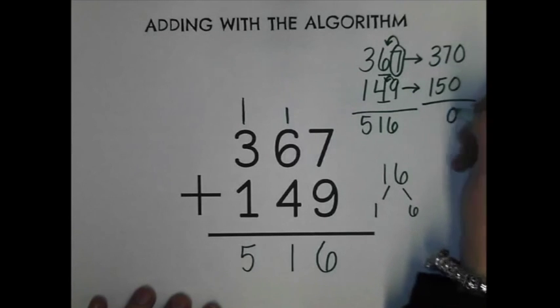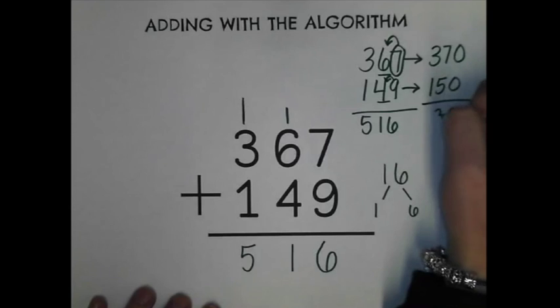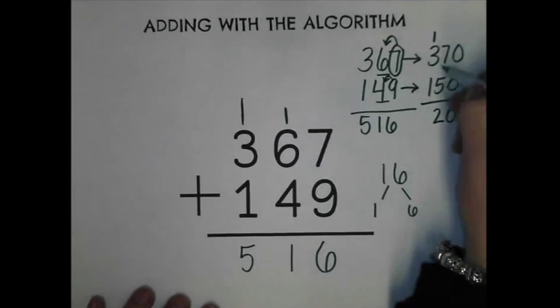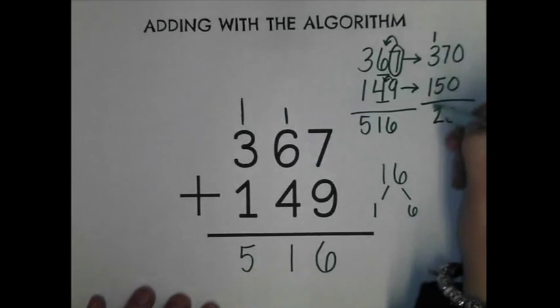So now I have zero, seven plus five equals twelve. Carry the one. Three plus one equals four, plus one equals five.